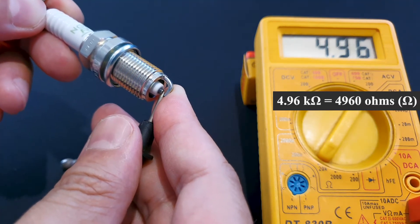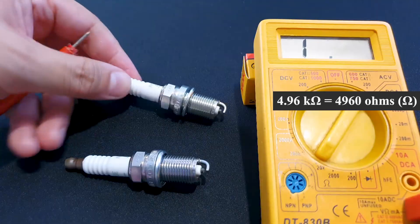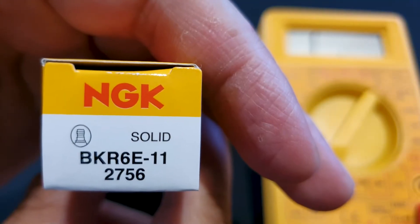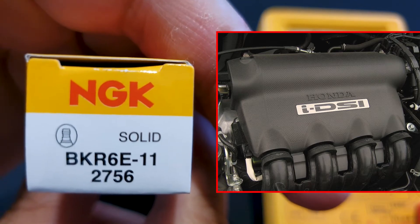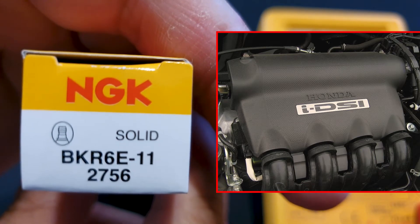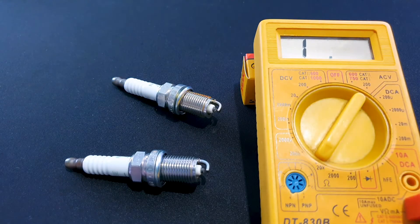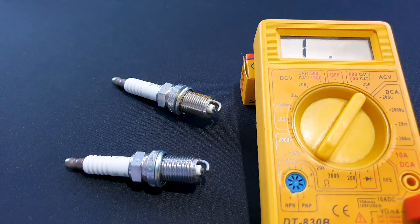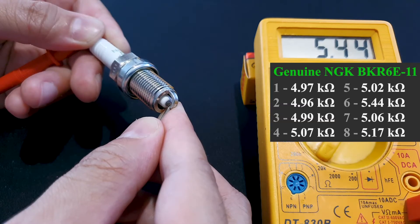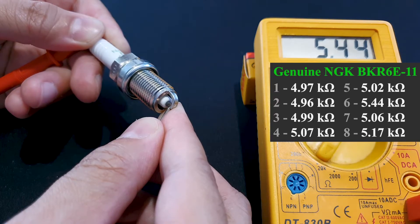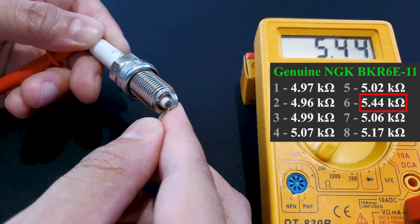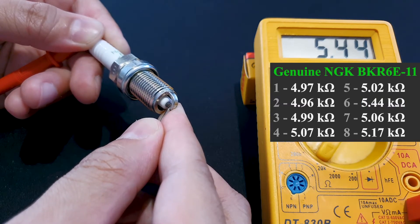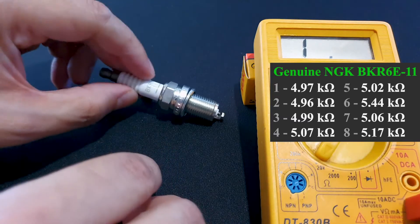4.96, again perfect. This particular spark plug is used in Honda IDSI engines, used in the first gen Honda Fit Jazz and fourth gen Honda City. This uses two spark plugs per cylinder. I'll test all eight of them. You can see the results on your screen. The sixth plug I tested shows 5.44, so that's just under 5,500 ohms. From what I checked online, a plus/minus 10% tolerance is acceptable, so I won't be worried about it.